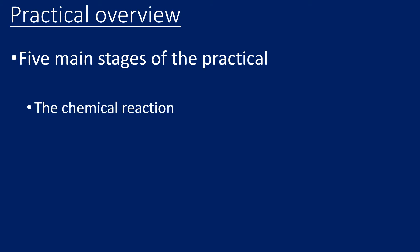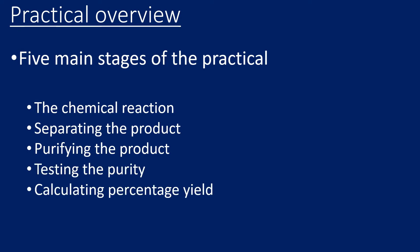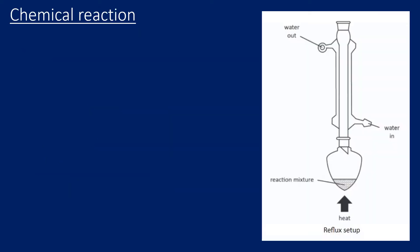The first section is the chemical reaction part. We've then got how we would separate our crude product from the chemical mixture. We would then look at how we'd purify our organic solid, test the purity of our solid, and finally do a percentage yield calculation. Let's look at each stage in detail.